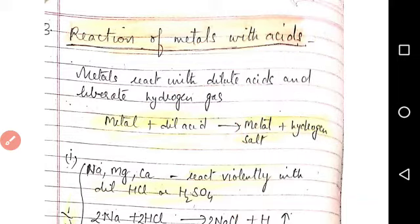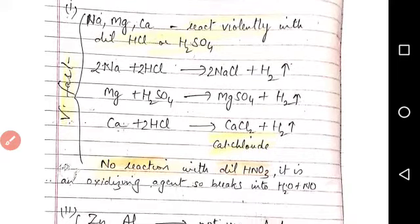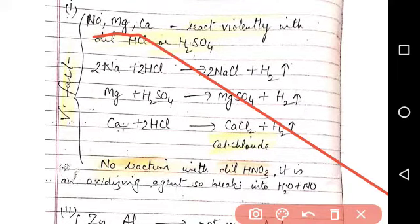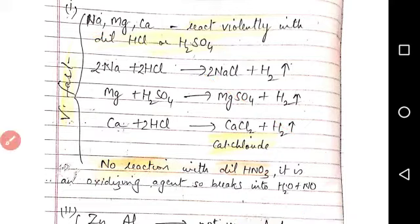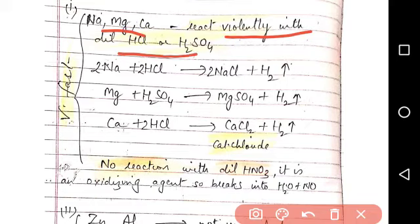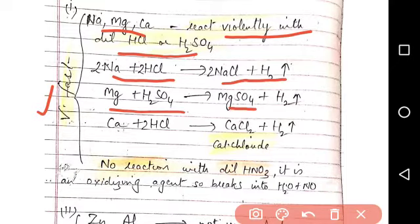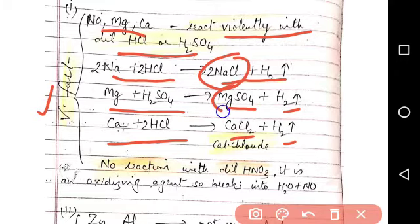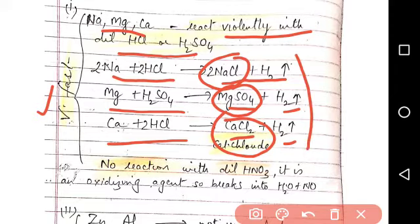Different metals react with different ease. First of all, sodium, magnesium, calcium. They react violently with dilute HCl or H2SO4. The reaction is very fast. 2Na + 2HCl gives 2NaCl + H2. Mg + H2SO4 gives MgSO4 + H2. Ca + 2HCl gives CaCl2 + H2. In first case, sodium chloride is formed, then magnesium sulfate is formed, then calcium chloride is formed. And in all cases, hydrogen gas is liberated.